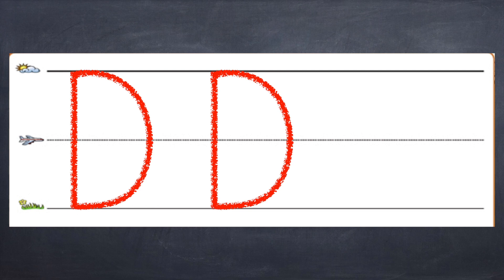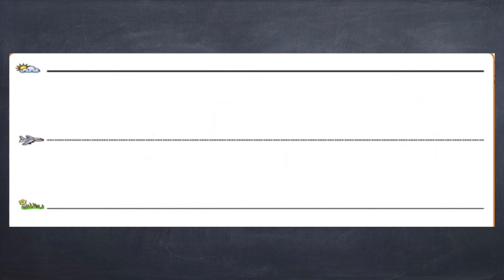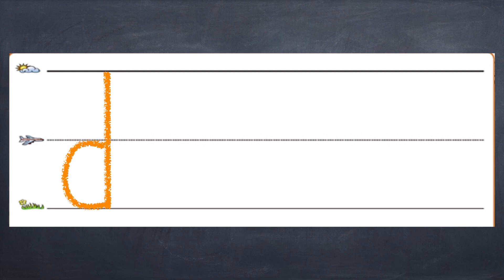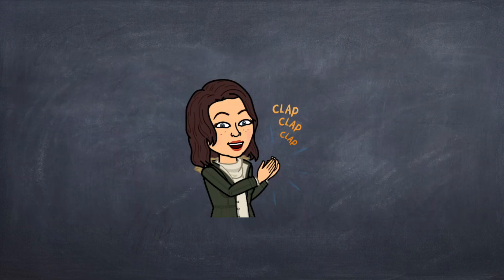That's our uppercase D. Let's try it some more. Down from the skyline, and then another line out, down, and around, in. One more time: we start at the skyline and go down to the ground line with a straight line, then from the skyline — out, around, down, into the ground line. Nice job! Now let's go on to our lowercase d. We make a straight line from the skyline down to the ground line, then go to our middle airplane line and draw a line from there — out, around, down, into the ground line. Let's try it two more times. Skyline, straight line down to the ground line, back to the airplane line, out and in. Good job! One last time: go to the skyline, make a straight line down to the ground line, airplane line, around and in. Nice job! There's your lowercase d. Give yourself a round of applause.